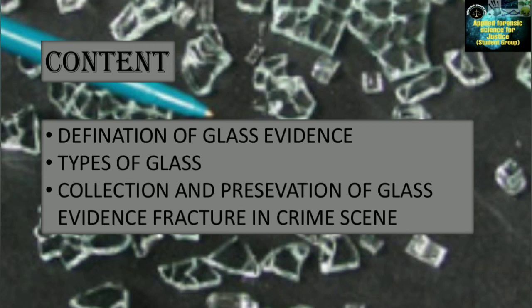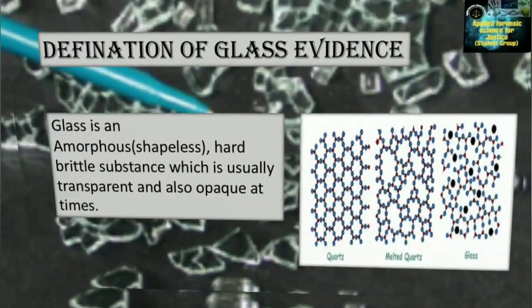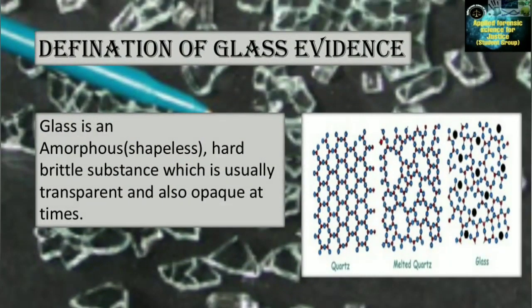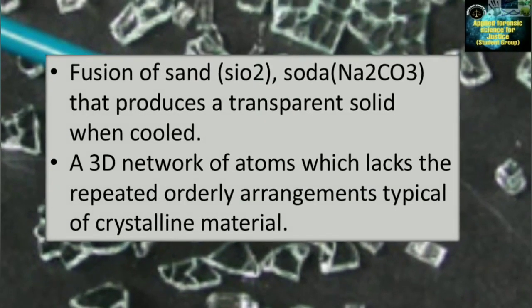collection and preservation of glass evidence, and fractures in crime scenes. Let's begin with the definition of glass evidence. Glass is an amorphous — shapeless — hard, brittle substance which is usually transparent and also opaque at times. Glass is the fusion of sand (SiO2) and soda (Na2CO3) that produces a transparent solid when cooled. Glass is a 3D network of atoms which lacks the repeated orderly arrangements typical of crystalline material.